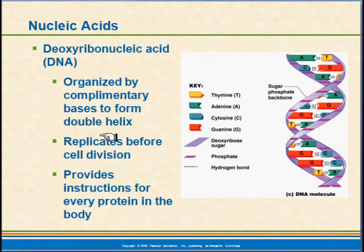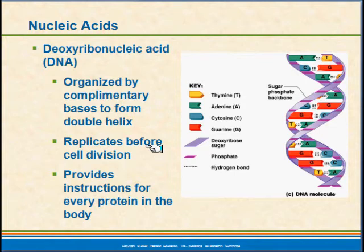If I've got half of that ladder, I know what had to have been on the other half. Everywhere I've got an adenine, there had to have been a thymine; everywhere there was a cytosine, there had to be a guanine — adenine and thymine, guanine and cytosine, all the way down. So I can duplicate that strand very easily. This replication occurs before cell division, also known as mitosis. The strands of DNA contain the genetic code in terms of genes, which provide instructions for every protein in our body.